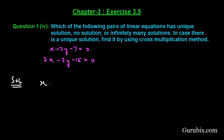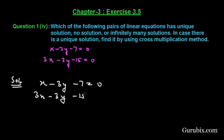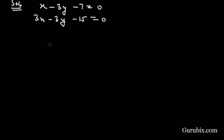First of all, we shall collect the given pair of linear equations, that is: x minus 3y minus 7 equals 0, and 3x minus 3y minus 15 equals 0.